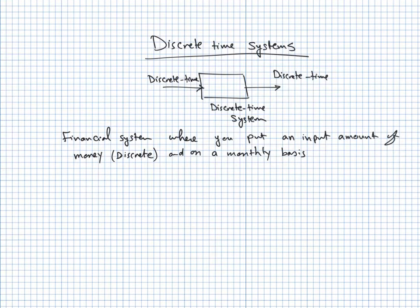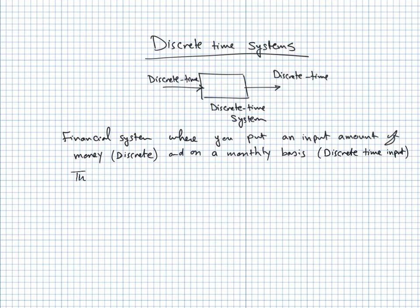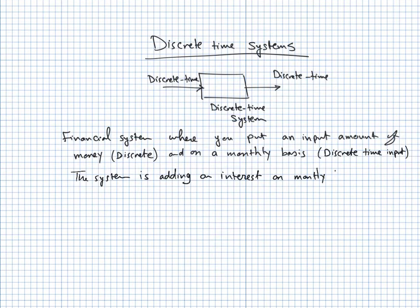Your time moves discretely: you can only put input to the system at the start of each month, and any change to the money happens also at the start of the month. This is a discrete time input because it occurs only at integer time events — first month, second month, third month — and the system is adding interest on a monthly basis.